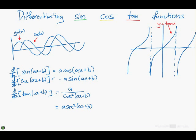Again, what you do is, the tan now turns into 1 on cos squared. And then you keep the ax plus b. And you put an a out the front. That's it. Pretty simple, isn't it?